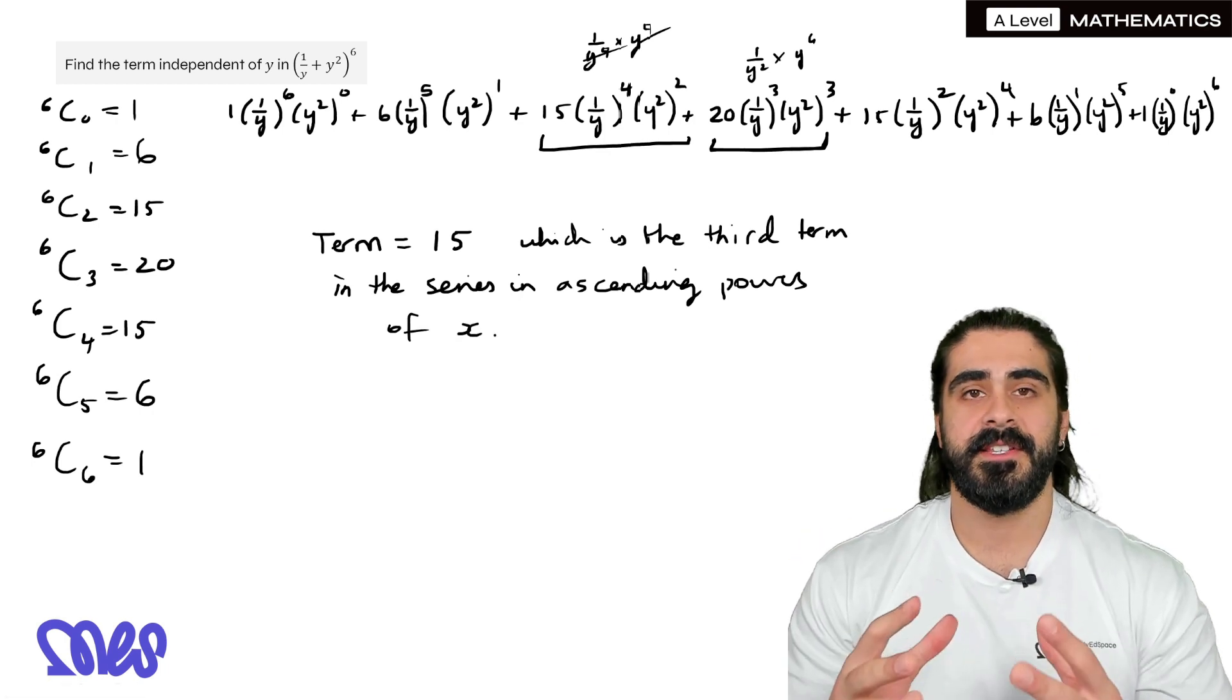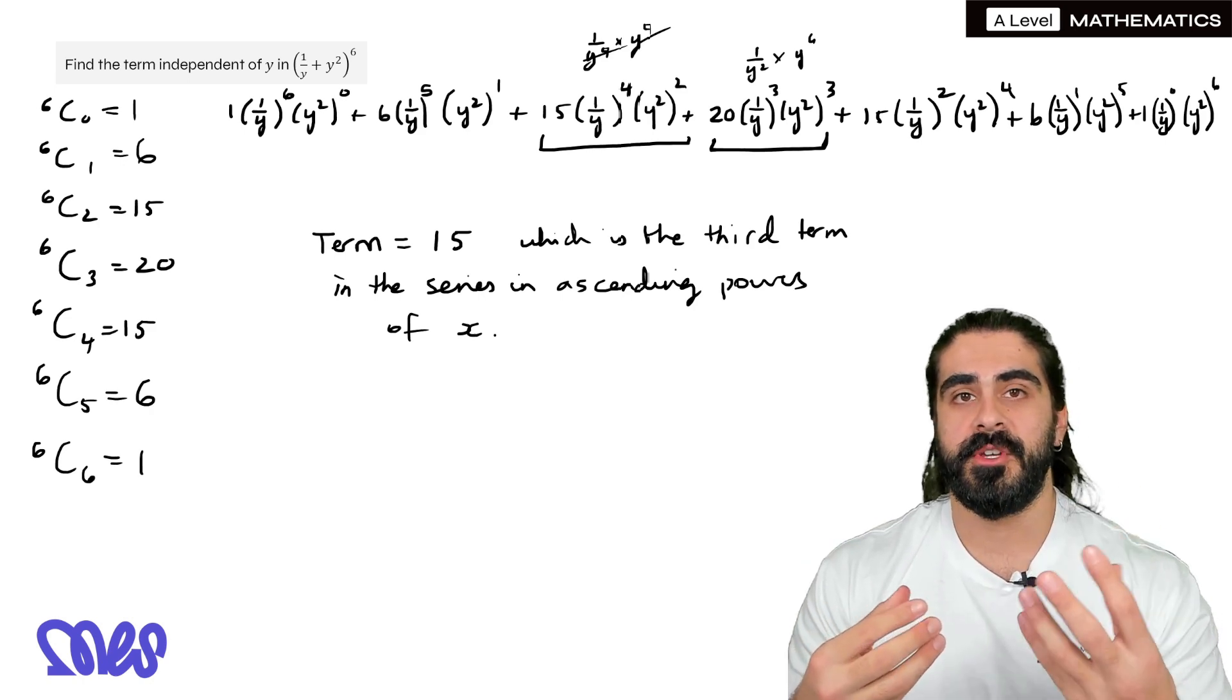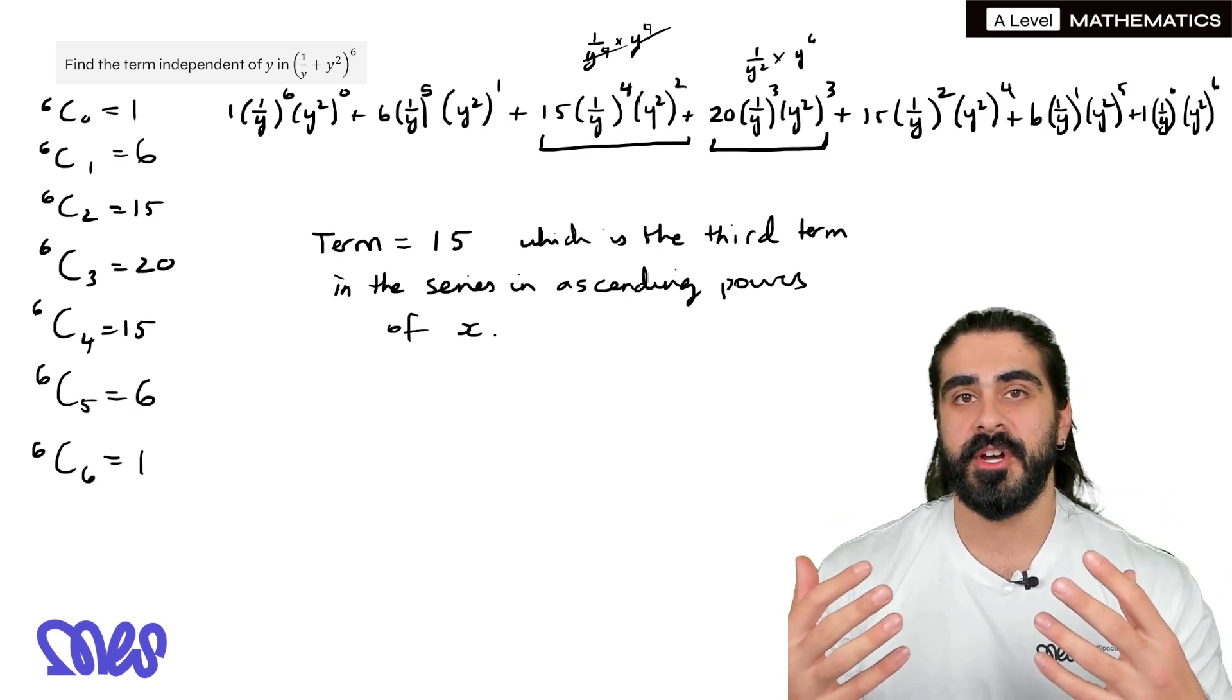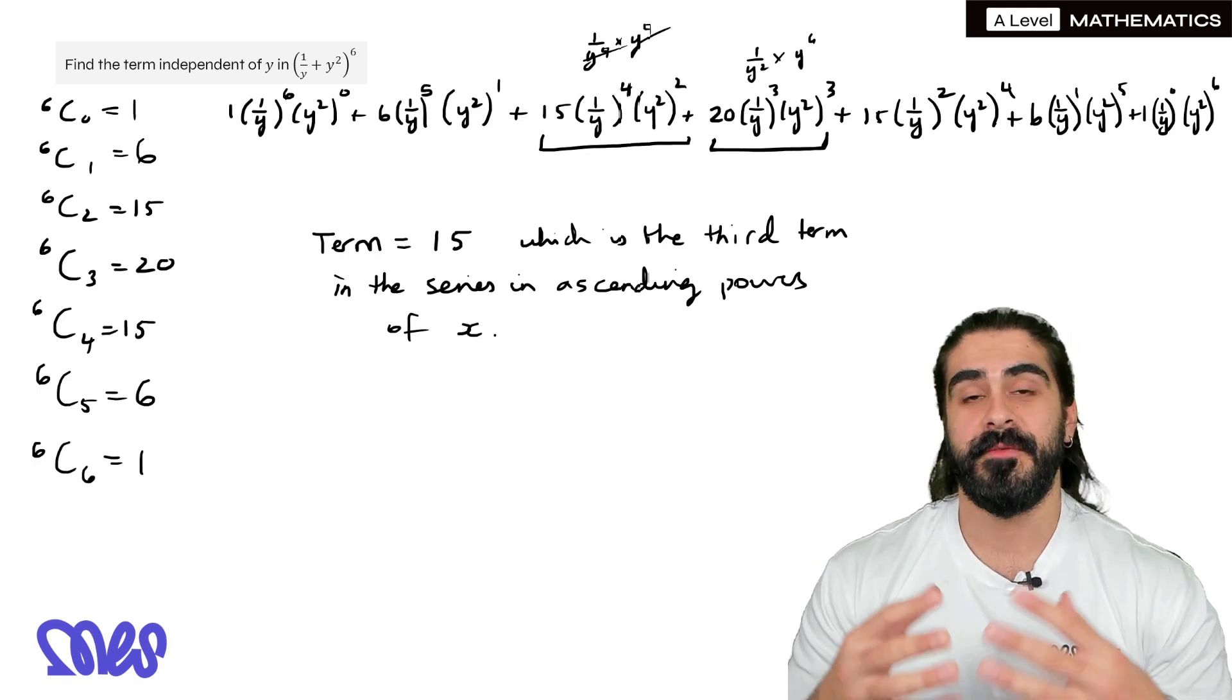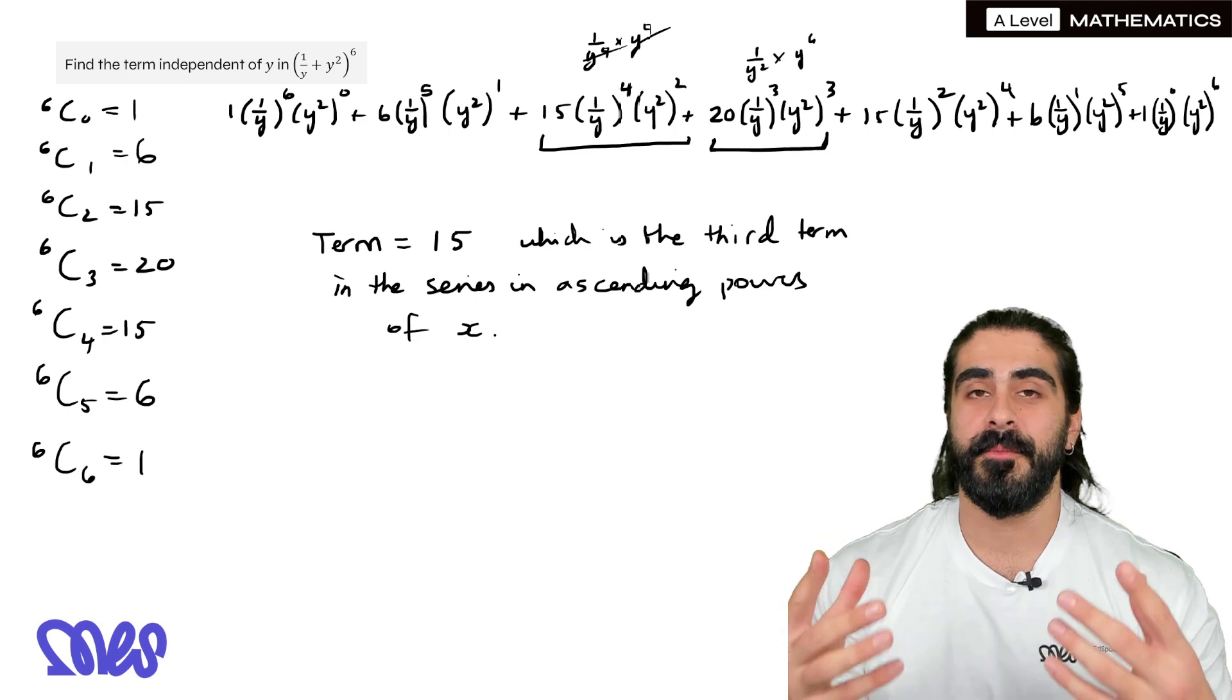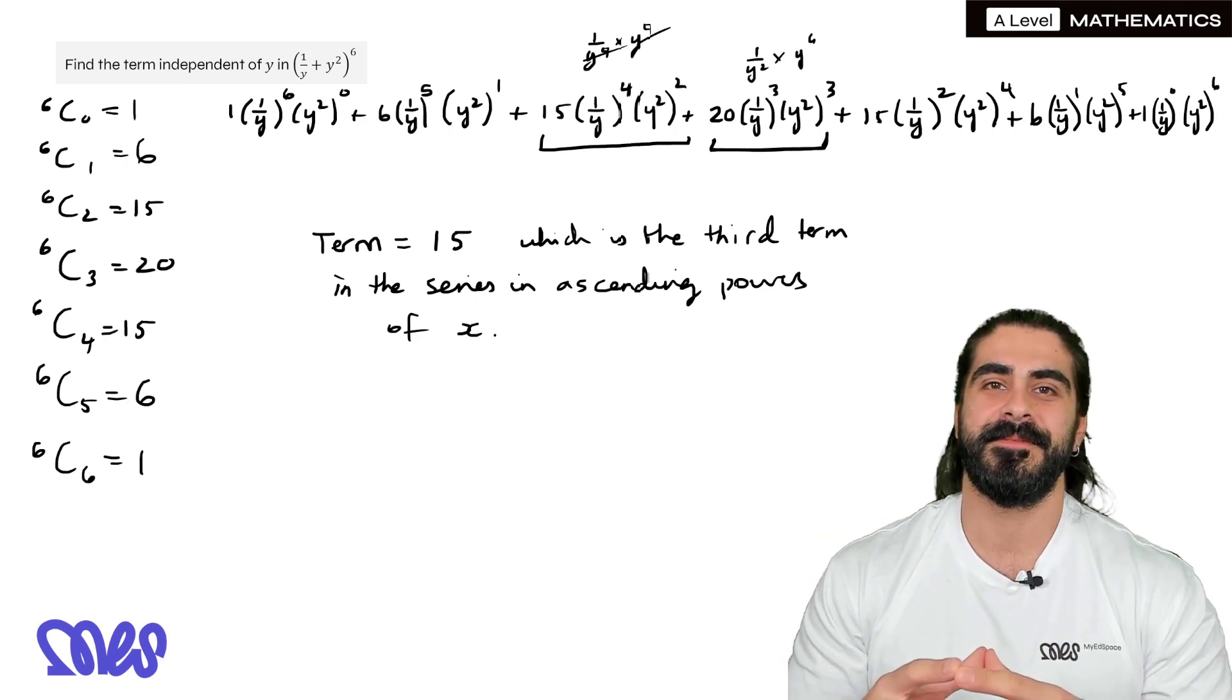So that's it guys. This is how we link factorial notation to the binomial expansion. It makes life a lot easier. In the next episode, I'm going to do some trickier examples. And eventually we're going to move into some exam questions as well. So if you learned something, please hit that like button and make sure you're subscribed for more maths content. I look forward to seeing you guys in my next video. Peace. Bye.